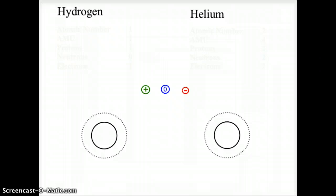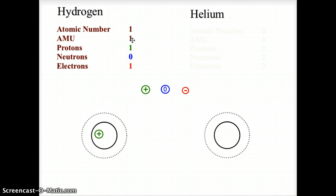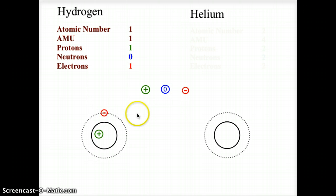Let's start building atoms using Bohr's model. For hydrogen, the atomic number is 1, meaning one proton in the nucleus. The mass number is 1, so mass minus proton value gives zero neutrons — no neutrons added. For a neutral atom, negative and positive charges must be equal, so we need one electron in the outer orbit. Here is a simplified model of the hydrogen atom.